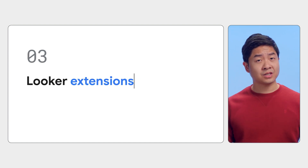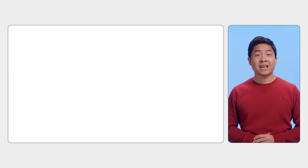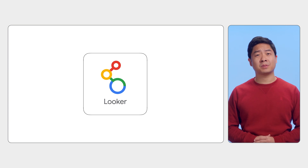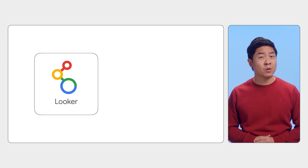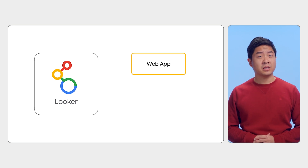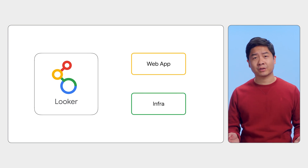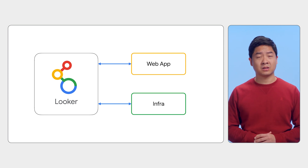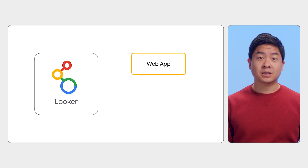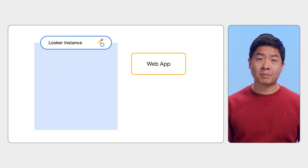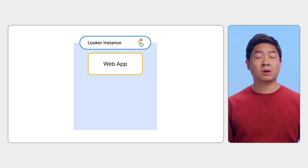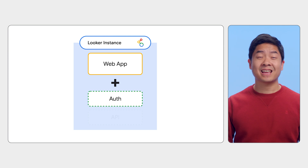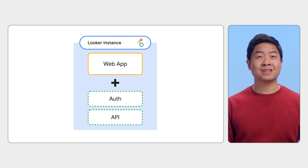Next, what are Looker extensions? Looker extensions are custom-built web applications hosted on Looker. Ever had stakeholders ask for features that just take a while to build? Say your stakeholders still want more functionality on top of the Looker platform. You could develop a whole new web app, set up the infrastructure, and figure out how to integrate the app with Looker. Or instead, you can use the Looker extension framework to have the Looker platform host your web application inside Looker. The framework also provides easy integration points for your app to access Looker features, like authentication and API access. Build the extra functionality you need faster with the Looker extension framework.